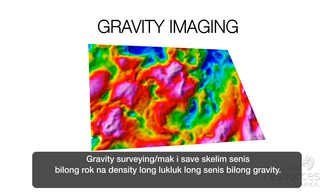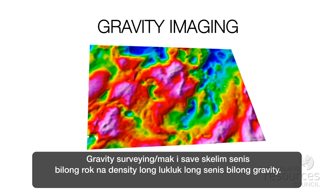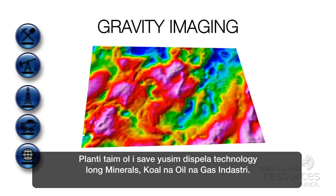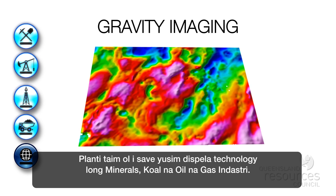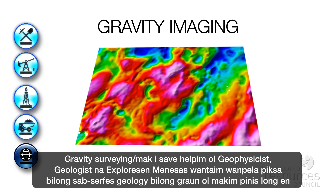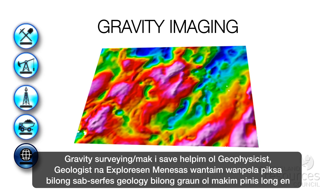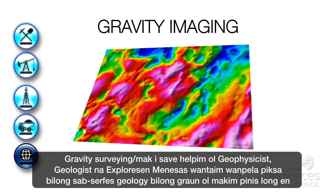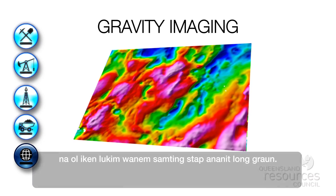Gravity surveying measures the change of rock density by looking at changes in gravity. This technology is used mostly in the minerals, coal and oil and gas industry. Gravity surveying provides geophysicists, geologists and exploration managers with a picture of the subsurface geology of a surveyed area so they can see what's underground.